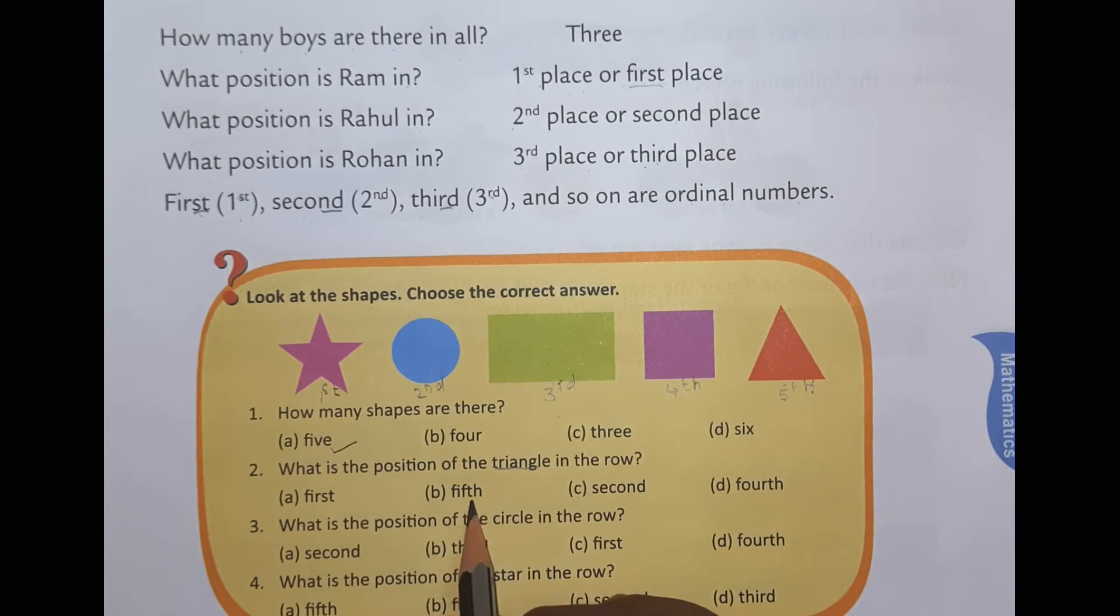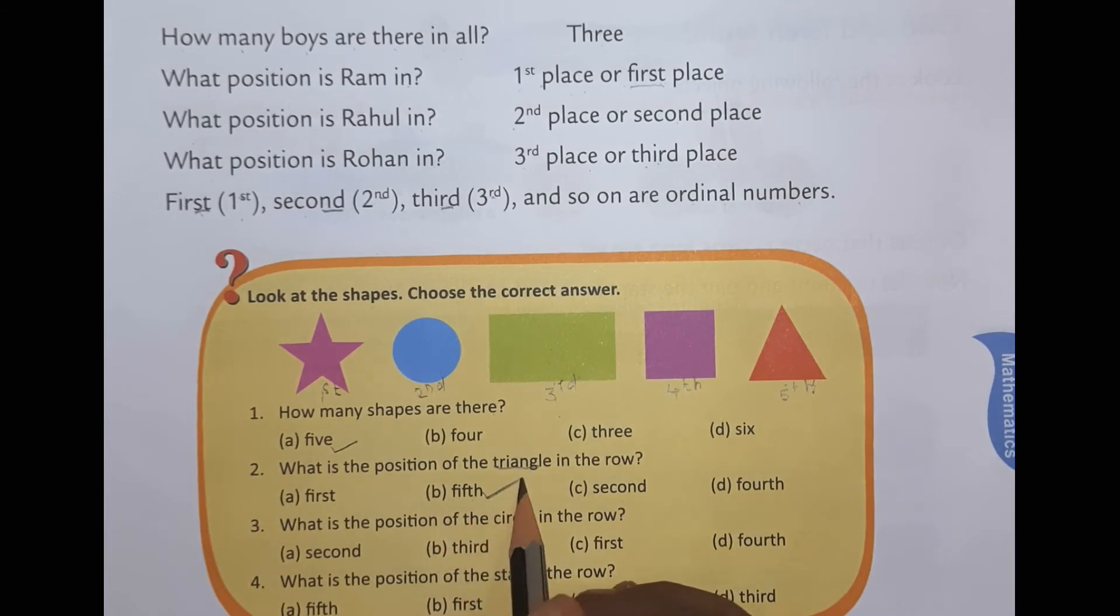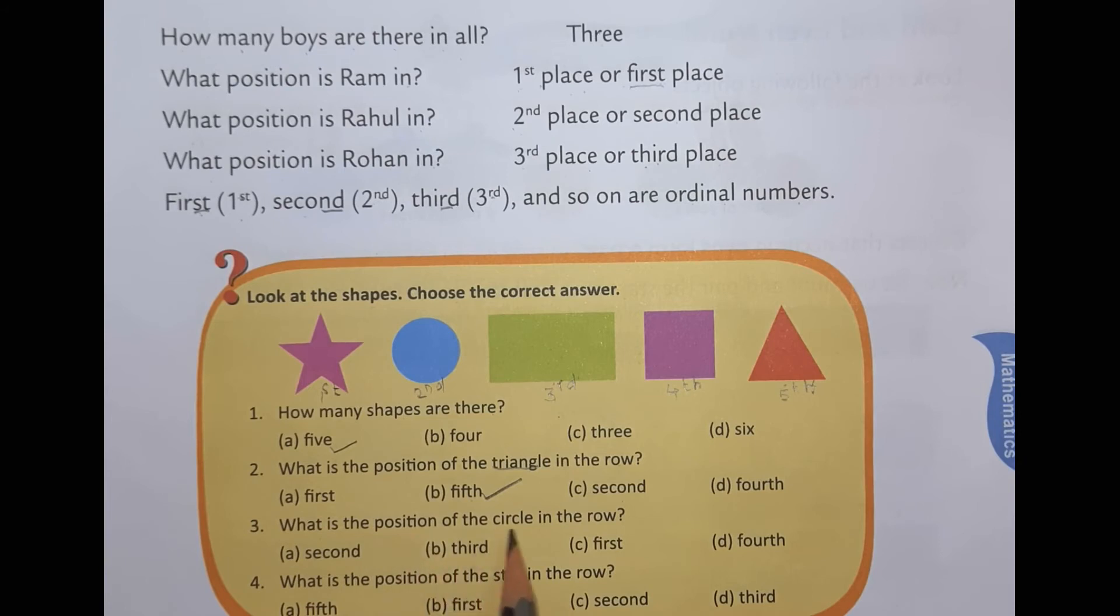And the spelling should be like this, fifth. What is the position of circle? So here one and two I have solved. Three and four is your homework.